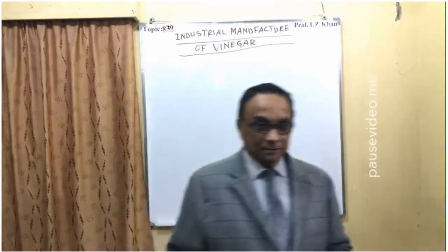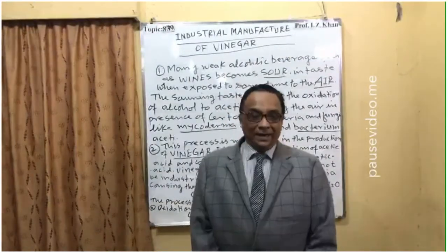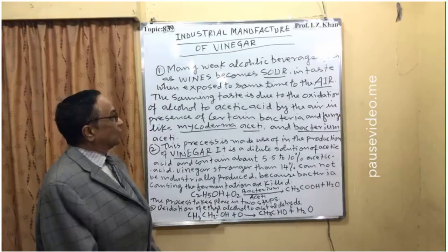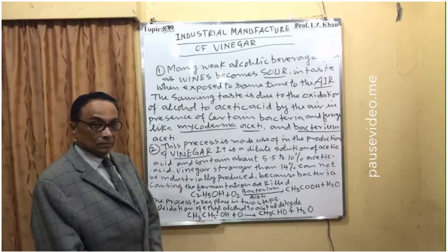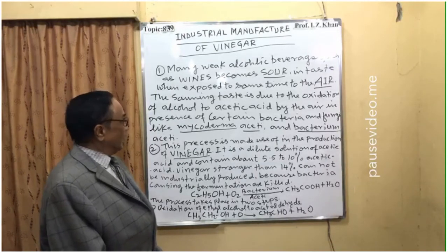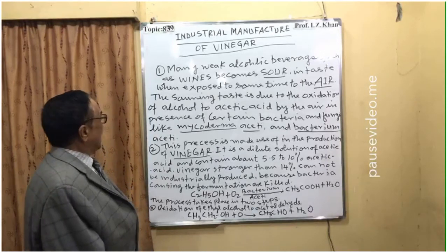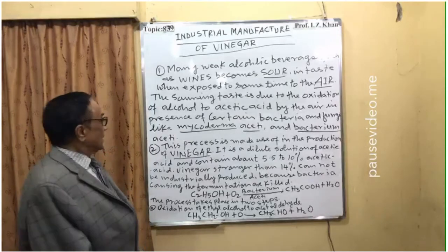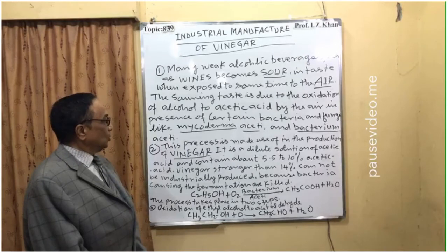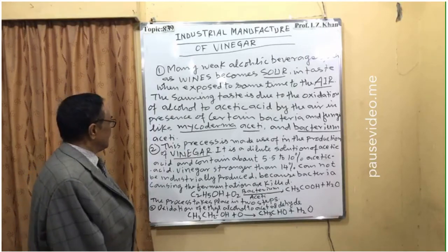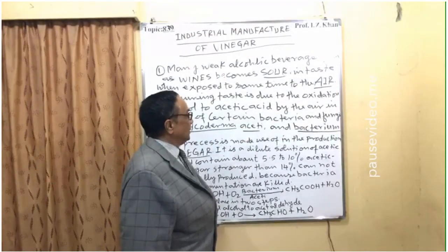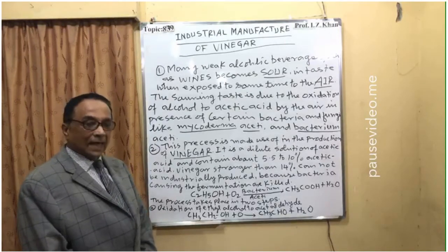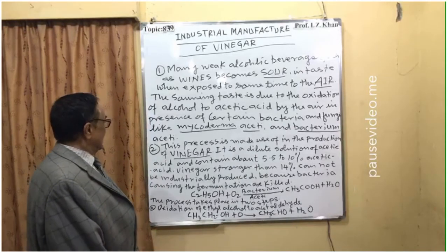Many weak alcoholic beverages such as wines become sour in taste when exposed for some time to air. The souring taste is due to the oxidation of alcohol to acetic acid by air in the presence of certain bacteria and fungi. First, bacteria: mycoderma aceti, and second: bacterium aceti. Actually, acetic acid was named after this bacteria — that's why it is called acetic acid. These are the microorganisms responsible for converting ethyl alcohol into five percent acetic acid, and that is called vinegar.